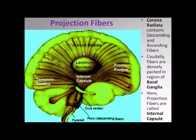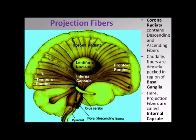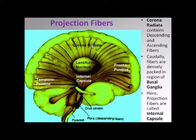Another example of a projection fiber is this. As you can see, this is a more diagrammatic representation. The fibers are radiating like a crown — that's why it is called the corona radiata. We shall see subsequently that this corona radiata has got many components, which are all labeled here.